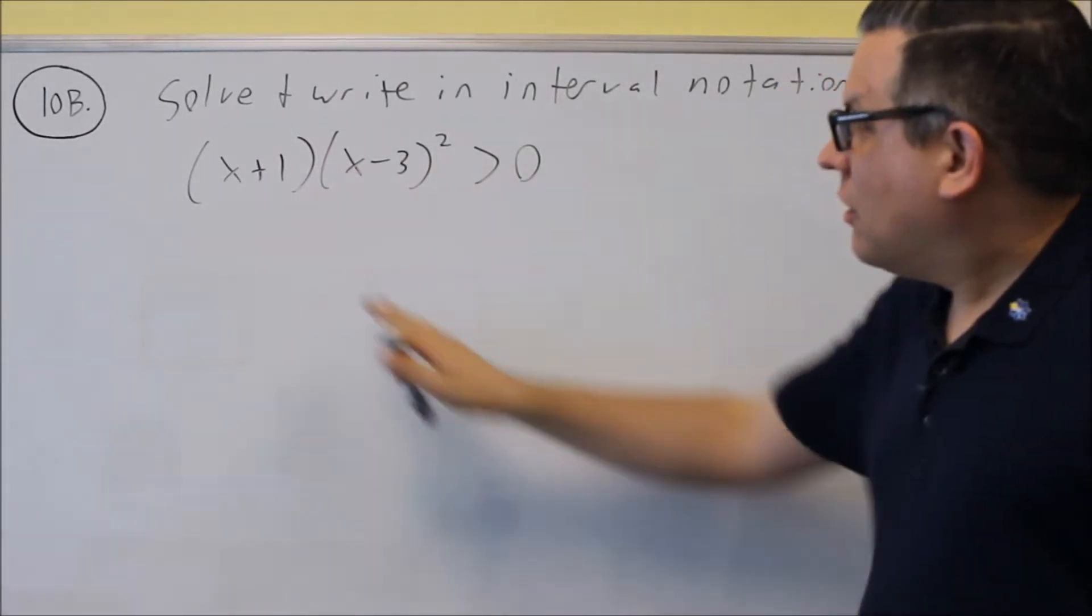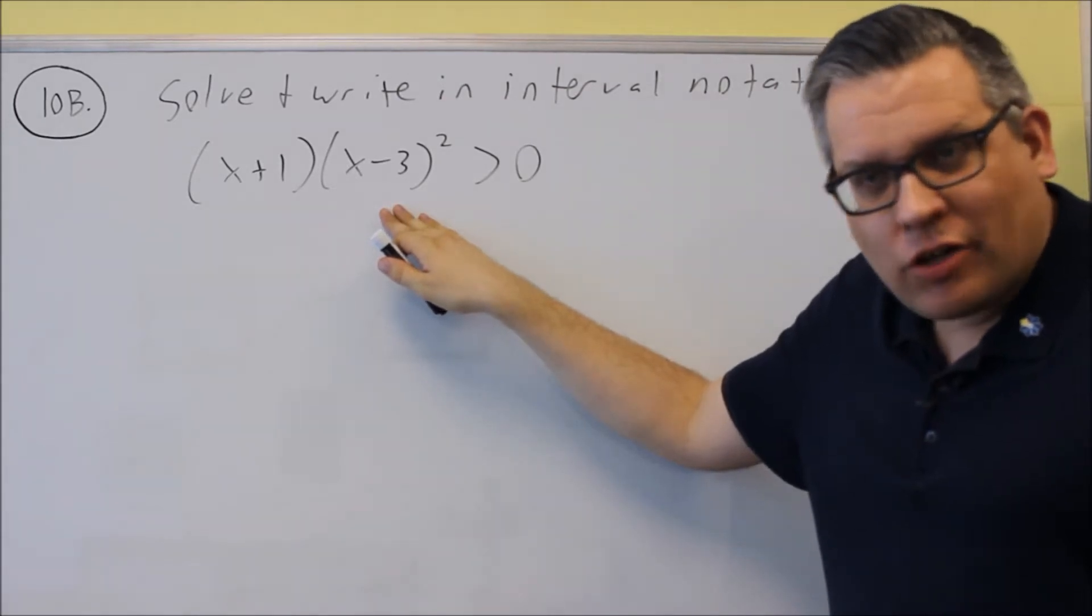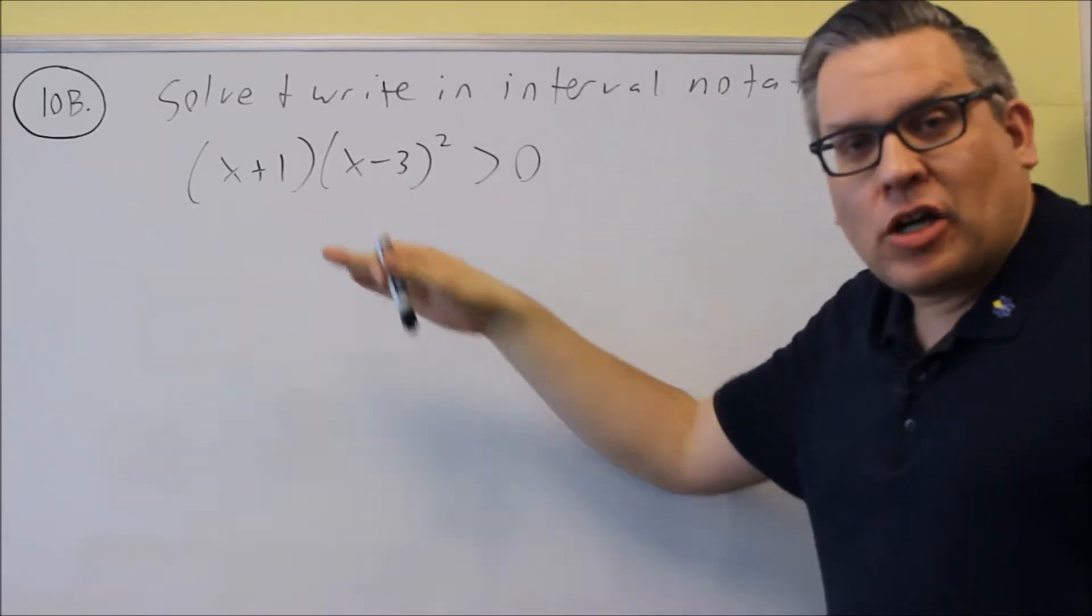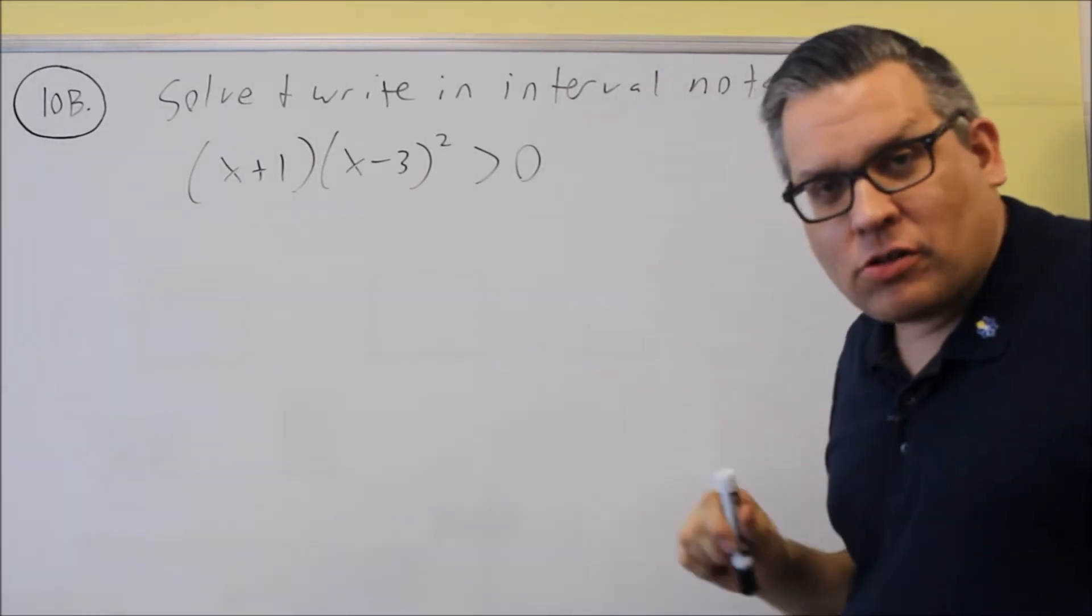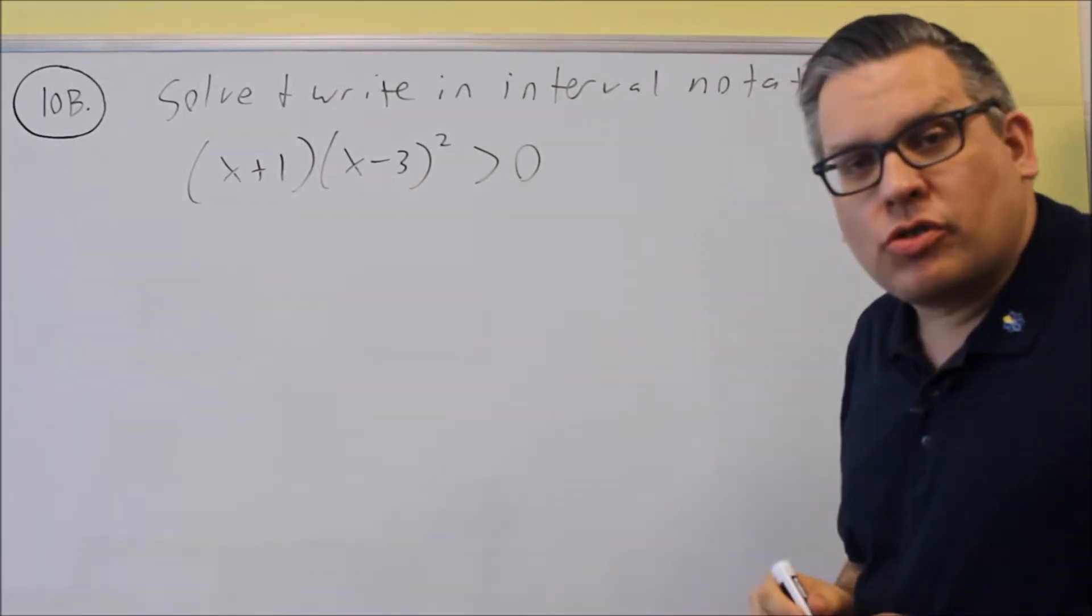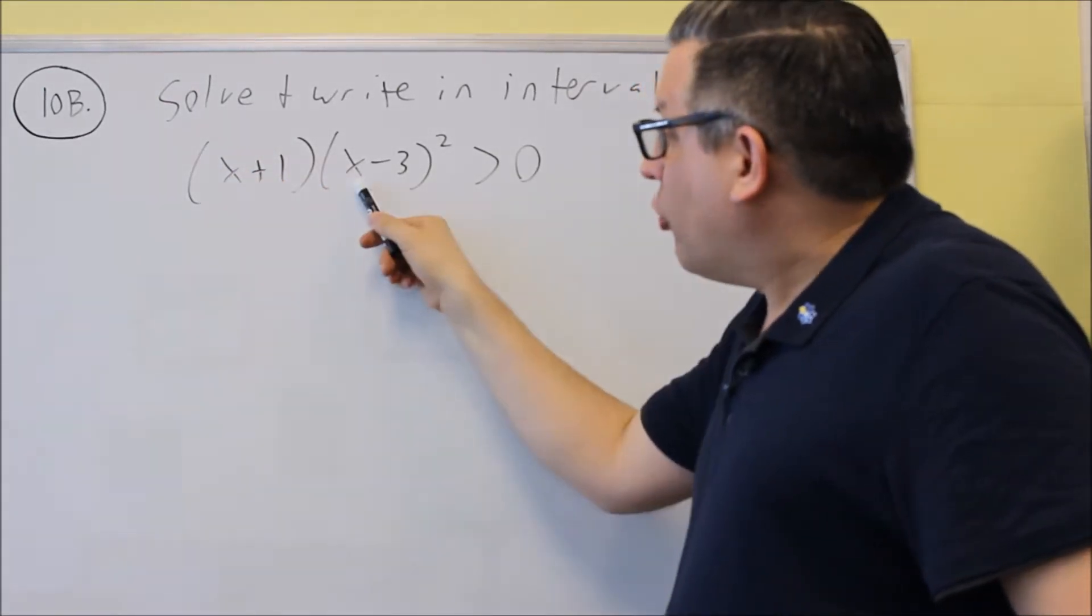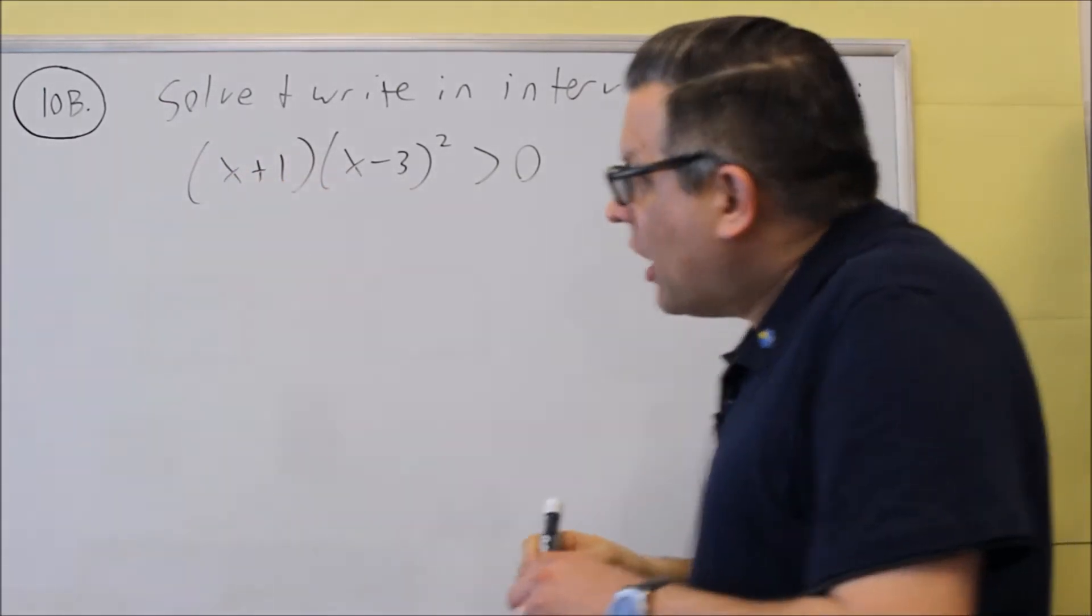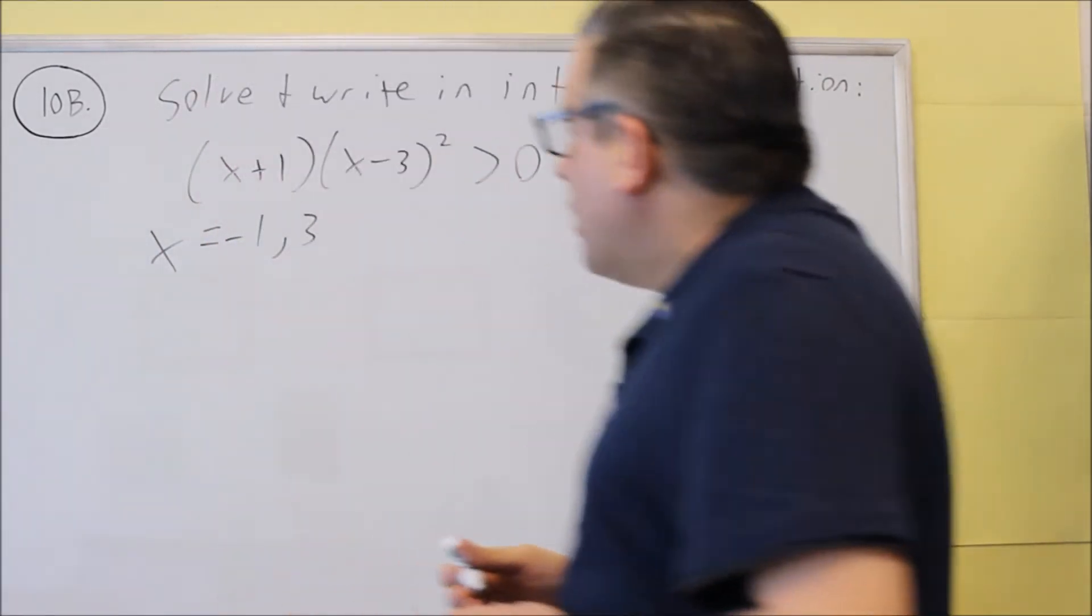For 10b, I have another one of these. This time the numbers are being multiplied together. It still doesn't matter if you're dividing or multiplying, you're just going to take all the factors, all the factored pieces, and set them equal to zero. So what will make this part zero will be negative one. What makes this zero is going to be three. So I have x is equal to negative one and three.